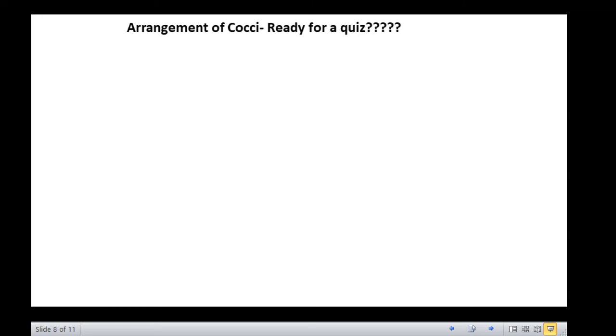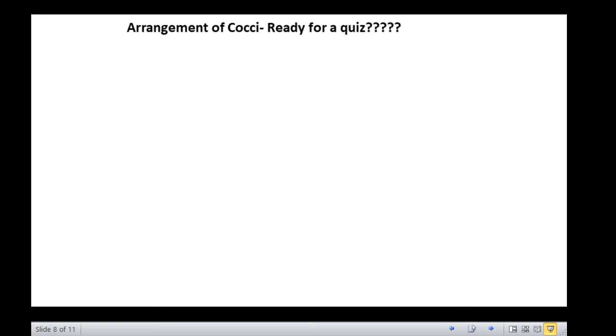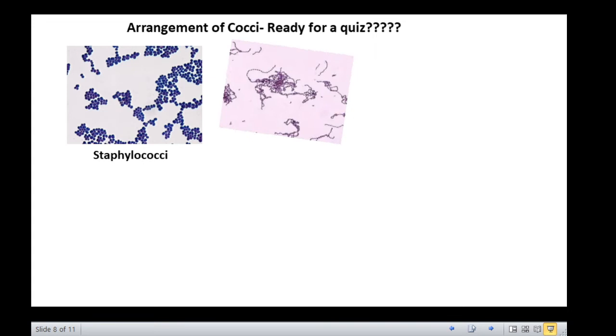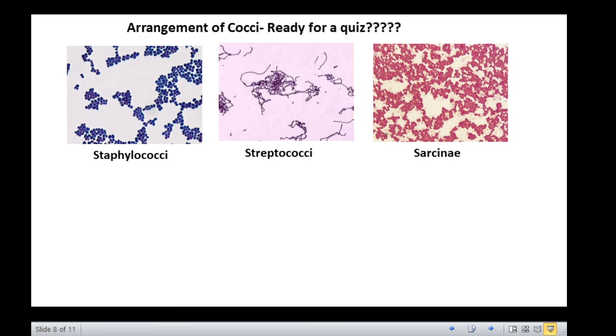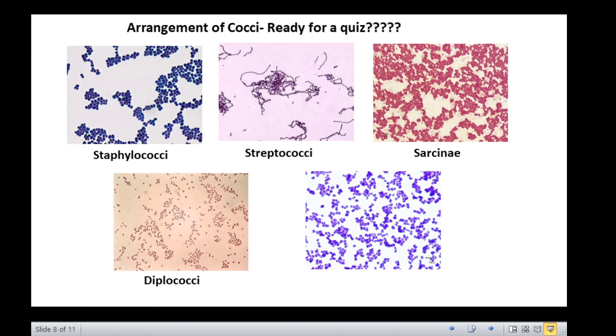So, let us take a quick quiz to just find out if you have understood this topic. So, what arrangement of cocci would you call this as? Well, it is staphylococci. Be ready for the next one. This is, you guessed it right, it is streptococci. How about this? They are cocci arranged in packets of eight, sarcinae. What would you call these? They are diplococci. And finally, these. It is the tetrad arrangement of cocci. I am sure you got them all correct. So, let us move on now to the next topic.